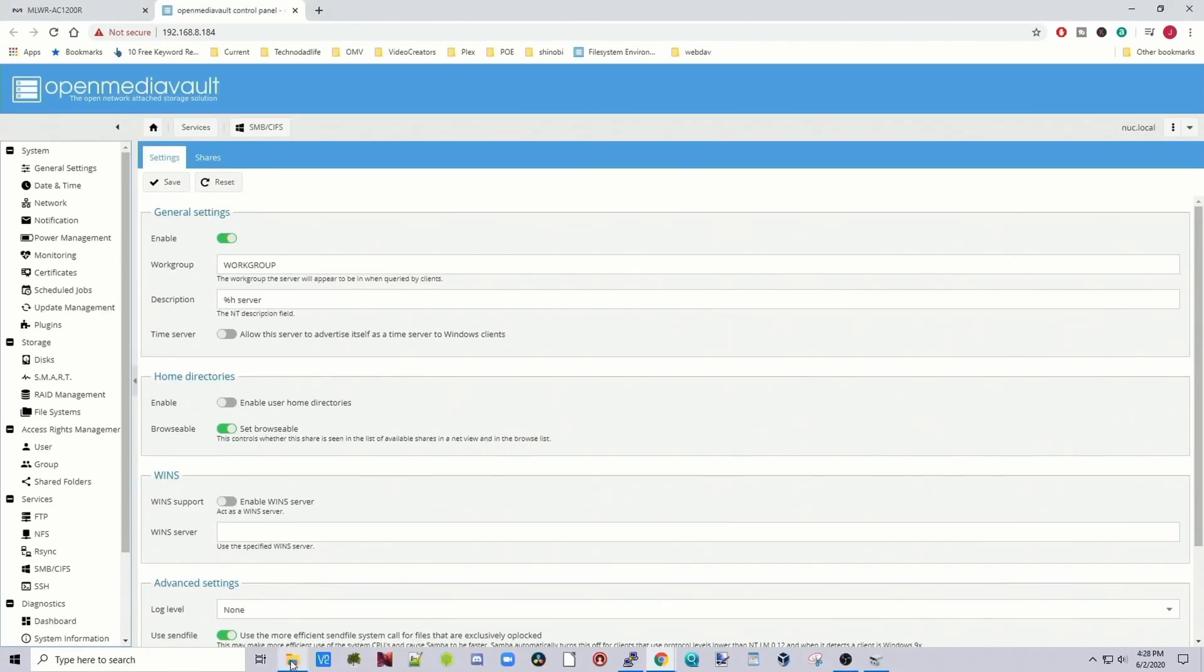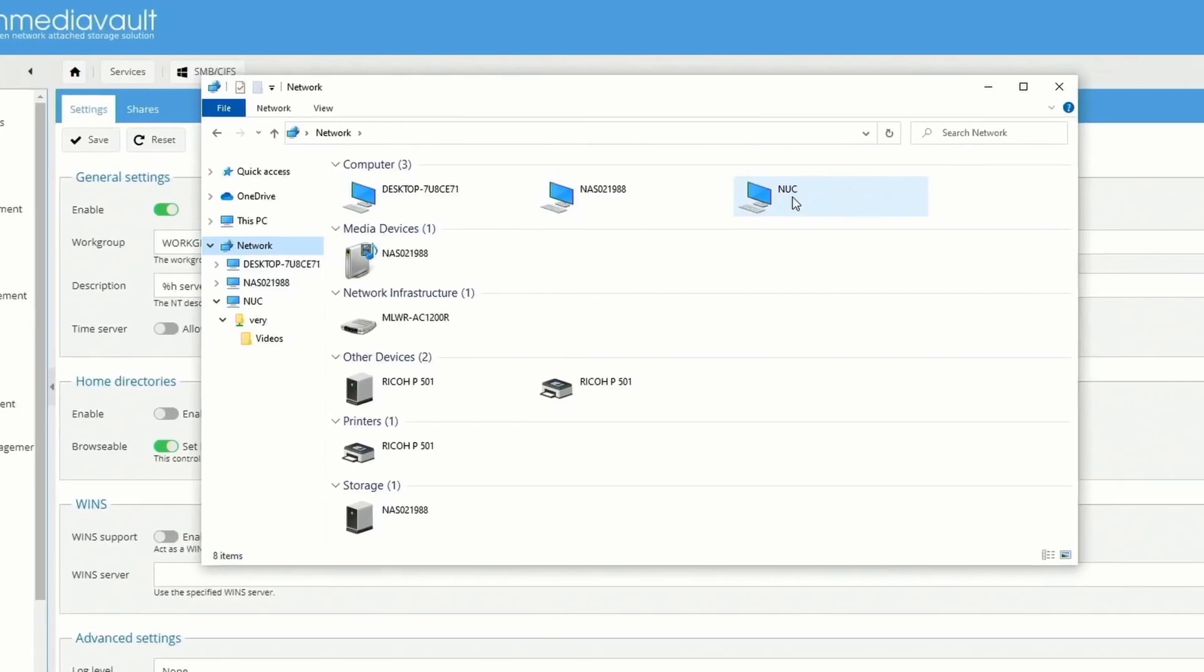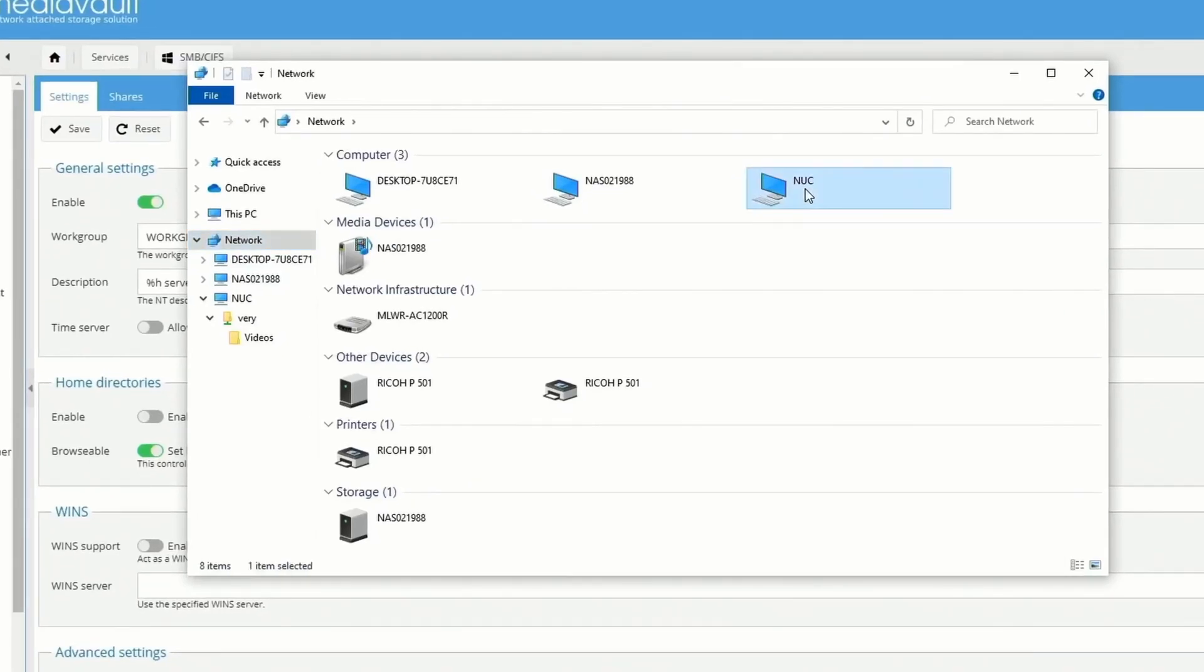Now we're going to go to our network share and find our folder and see if our files are still there. Next we want to click on File Explorer, click on our network. For me, my server name is Nook. Double click on that. There is our very share. Double click on that.